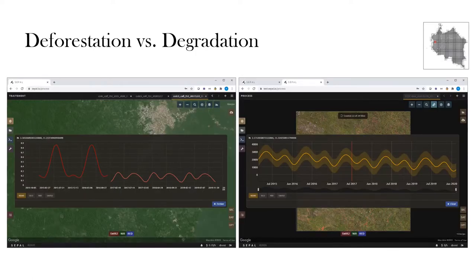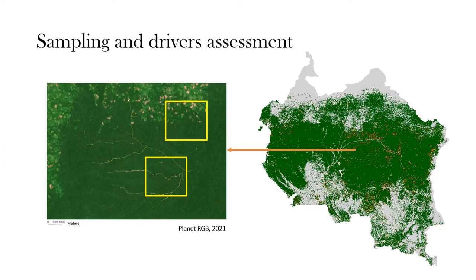Deforestation and degradation have different definitions, but from a remote sensing perspective it can be difficult to discern. We use high temporal resolution time series to detect and distinguish deforestation and degradation across the entire Congo Basin. Once we produce a wall-to-wall map, we will use a sampling approach to identify drivers in different types of changes — collecting high-resolution Planet data at sample areas to detect drivers such as logging roads or cultivation.